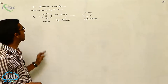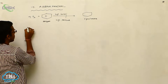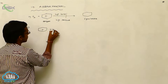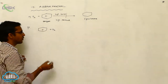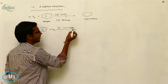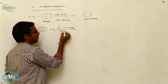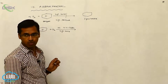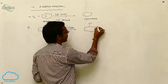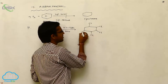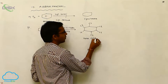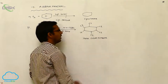Cyclohexane contains only single bonds, while benzene has double bonds. Another example of an addition reaction: benzene undergoes chlorination under UV light at high temperature, forming hexachlorobenzene — meaning each carbon carries a chlorine atom.